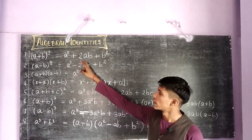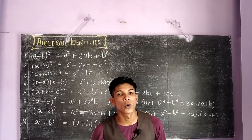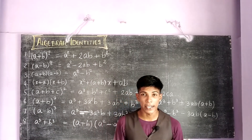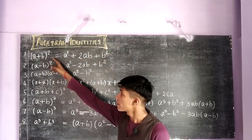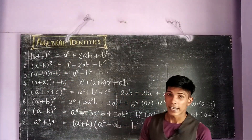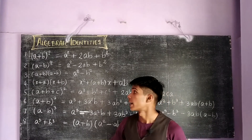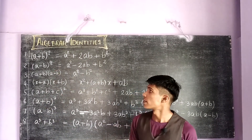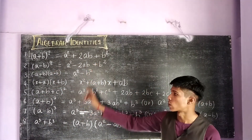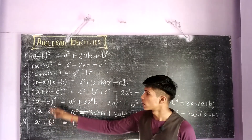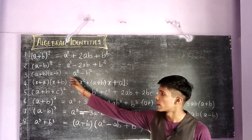So basically you know these two identities: a plus b whole square and a minus b whole square. So a plus b whole square gives a square plus 2ab plus b square, and a minus b whole square gives a square minus 2ab plus b square.